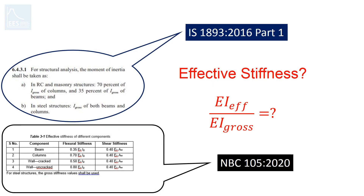Hello everyone and welcome back to earthquake engineering with Swapnil. Today we are going to look at effective stiffness. This was a topic that many of us were unaware of or ignored in our practice until the 2016 version of IS 1893, the Indian Standard for earthquake resistant design of structures, brought it to our attention. Similarly, the updated version of NBC 105 2020 goes further by introducing effective stiffness to other components such as walls, in addition to beams and columns.